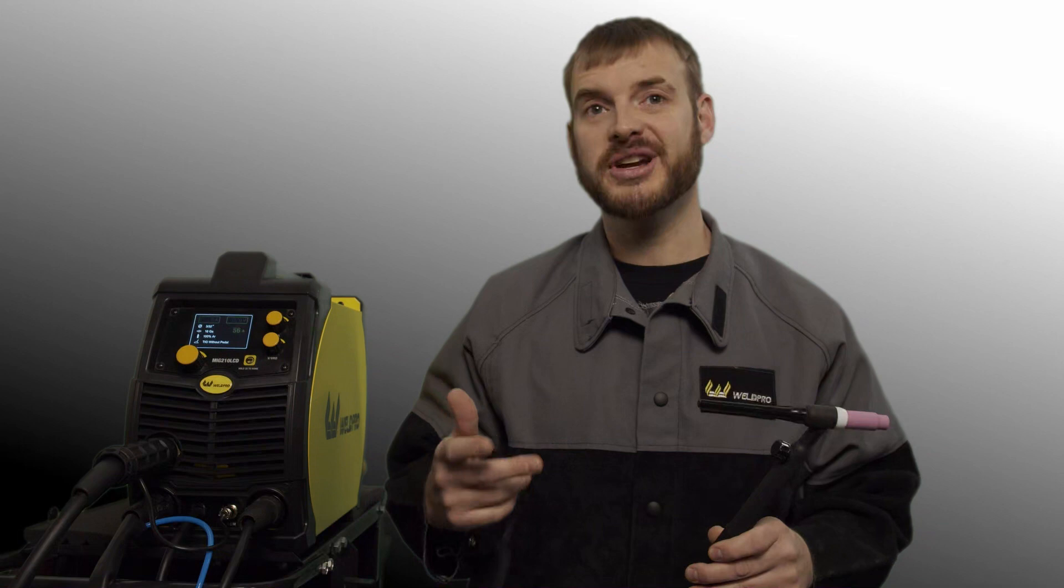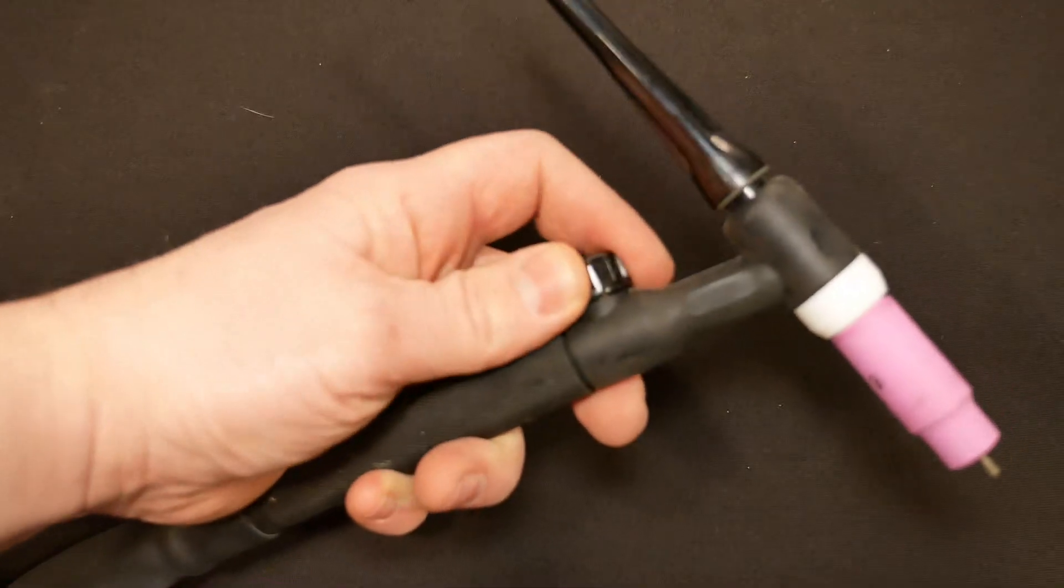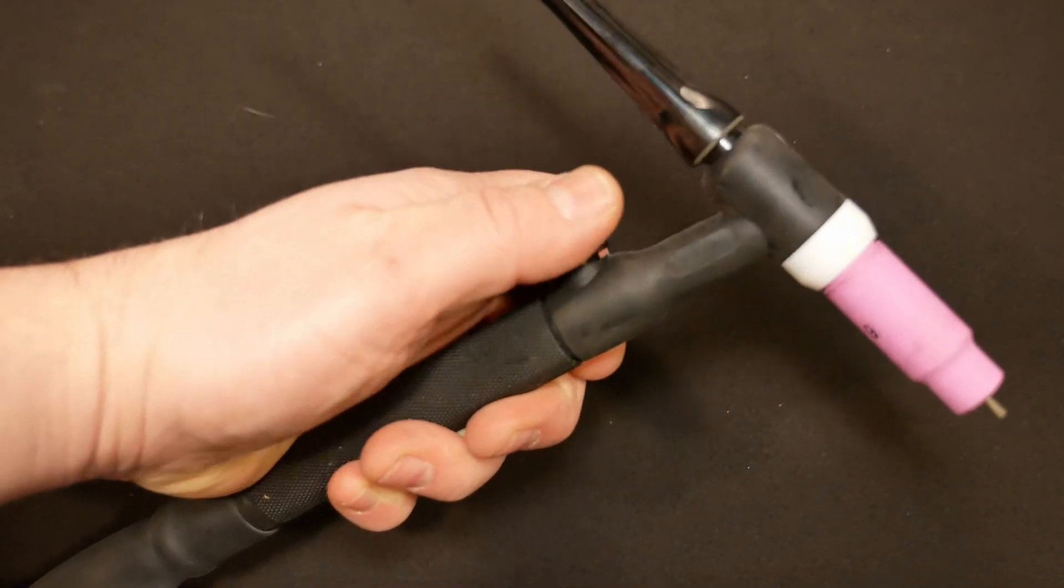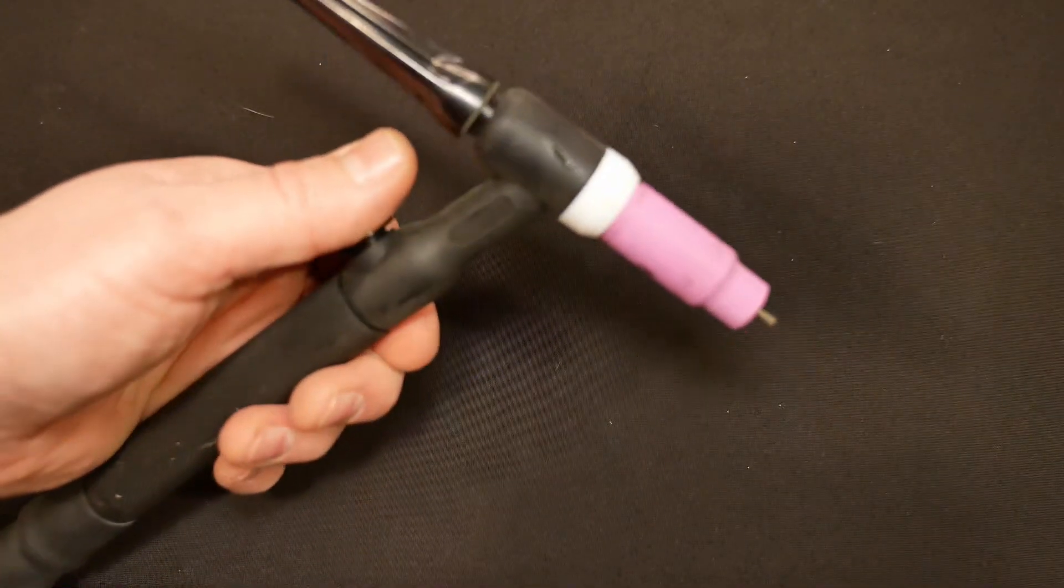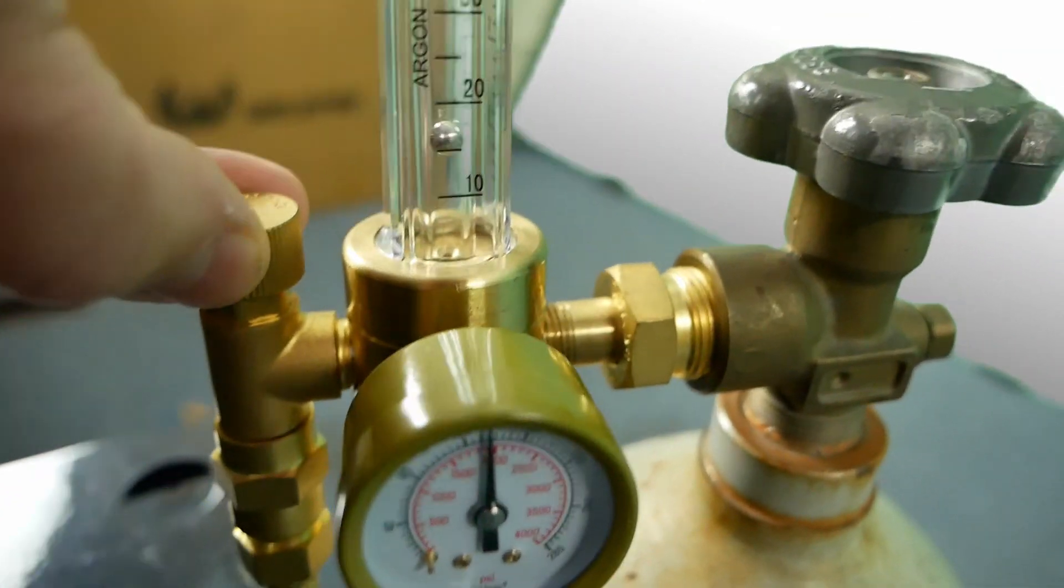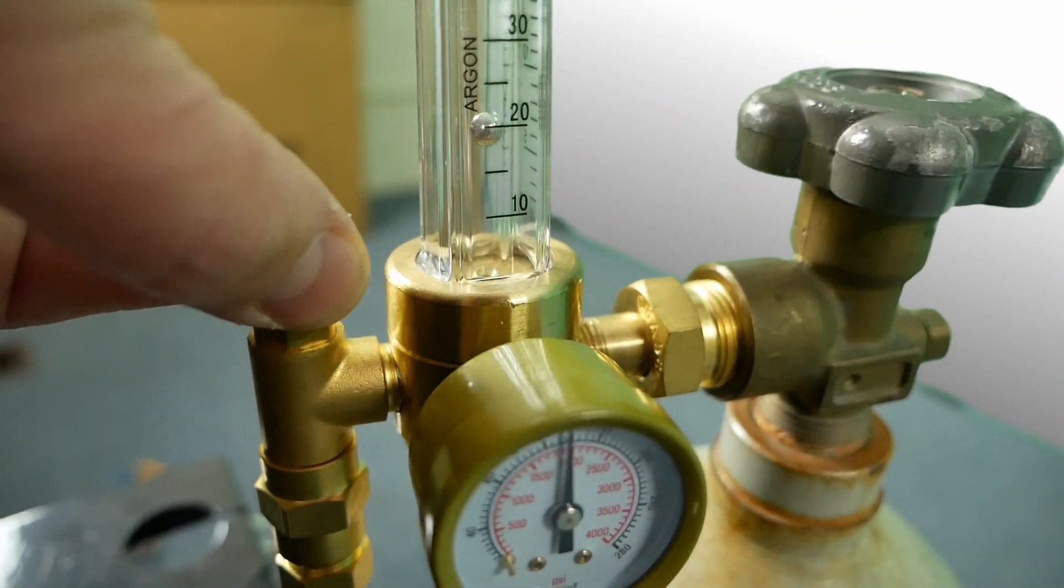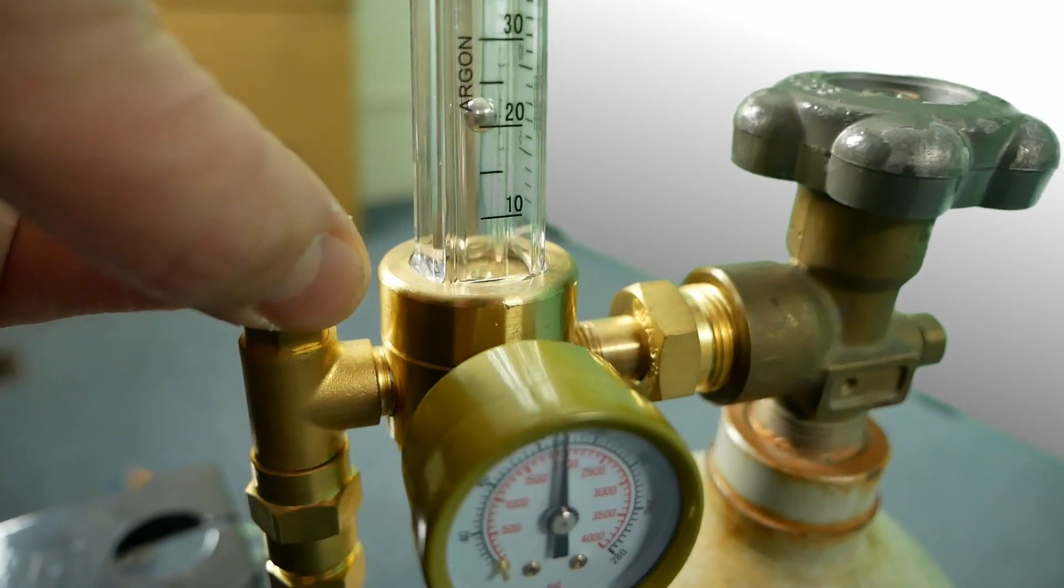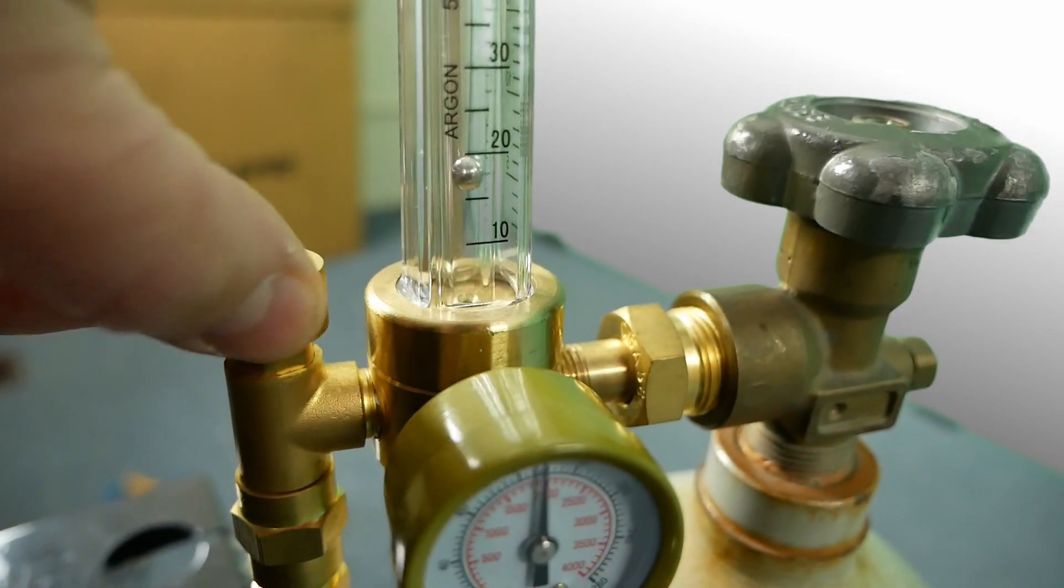The last thing we'll do to get set up for TIG welding is to check our gas flow rate. We do this by ensuring our gas bottle is on and we open the gas valve on our TIG torch. This will initiate the flow of gas to the torch and you'll see the flow meter ball move. Use the small brass screw on the flow meter to adjust the flow rate. A good starting point is about 20 cubic feet per hour, so I'm going to go ahead and set it there.